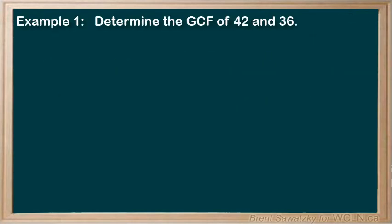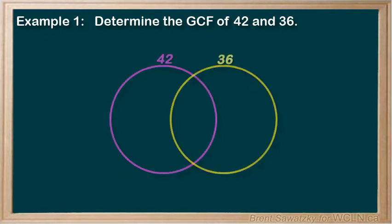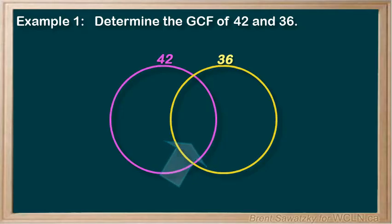Example 1: Find the Greatest Common Factor of 42 and 36. This one has small enough numbers that you might be able to do it in your head. Nevertheless, it's a good question to demonstrate our method. A Venn diagram is typically shown as two overlapping circles — one for the 42 and one for the 36. We overlap the circles, and then we're ready to insert our data. To generate that data — our prime factors — we'll use factor trees, one for each of our numbers.